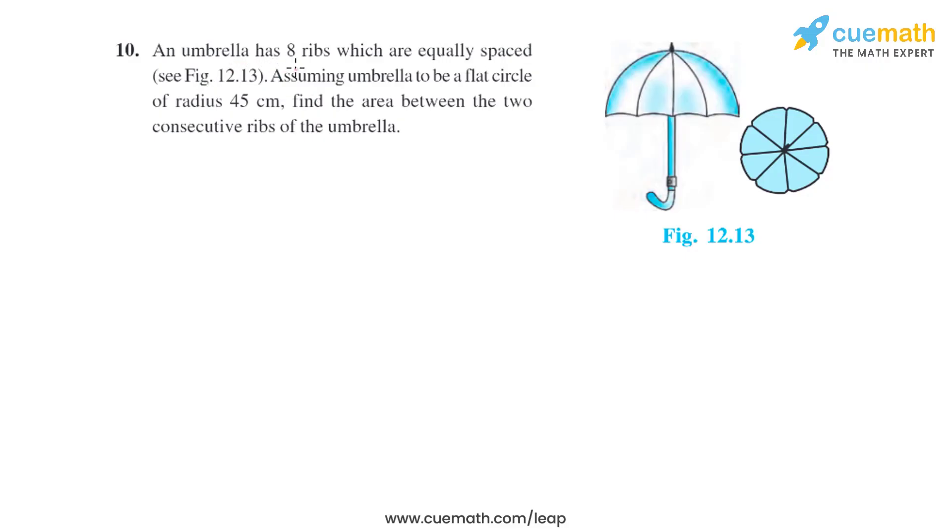Question 10 of this exercise says an umbrella has eight ribs which are equally spaced. Assuming the umbrella to be a flat circle of radius 45 centimeters, find the area between the two consecutive ribs of the umbrella.